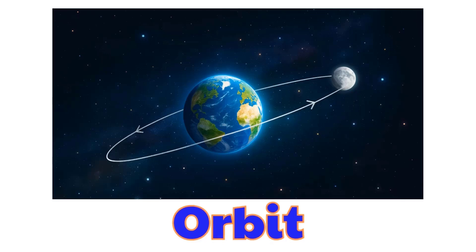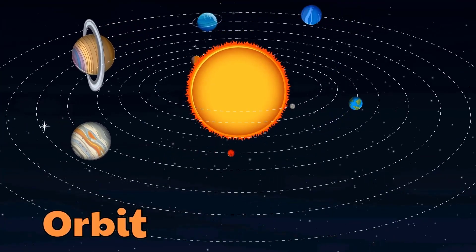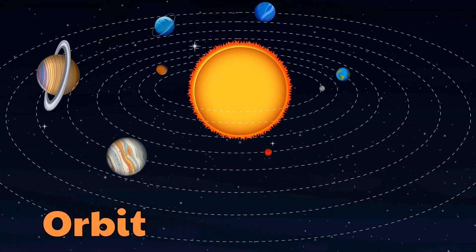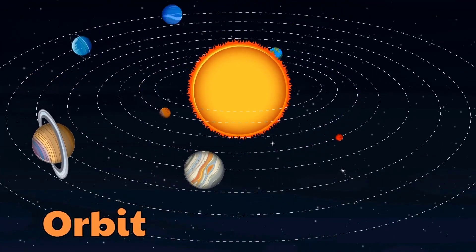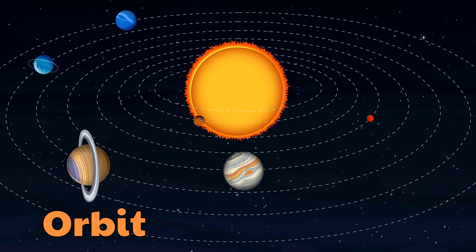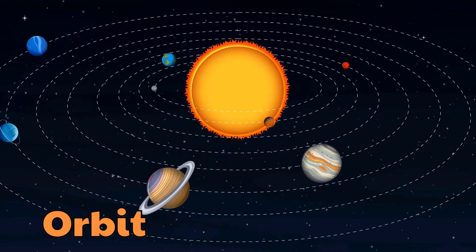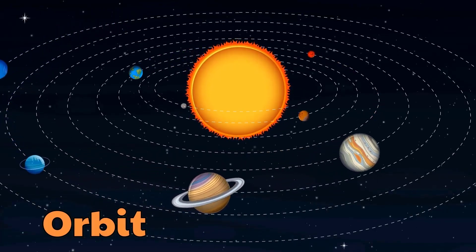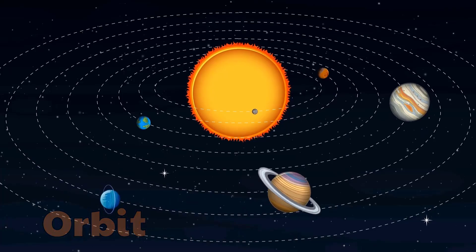Orbit. This is an orbit. An orbit is the curved path an object follows when it goes around a planet, a star, or another body in space.